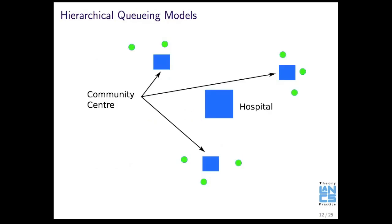So, moving on to the current work. So, hierarchical queuing models. What you have here, and often happens, is you might have, in green here, I've got the demand nodes. And all these demand nodes could possibly go see a community center or a general practitioner. And before getting to the hospital, they'd have to go through these community centers.